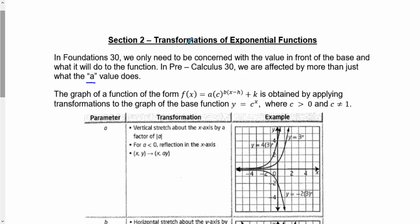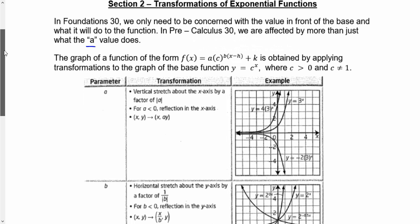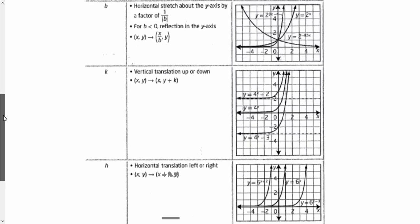Because we talk about transformations, we talk about the general form: y equals a times our function of b bracket x minus h, plus k, where each of these things deals with a different type of transformation. And that's exactly what this entire page is for.